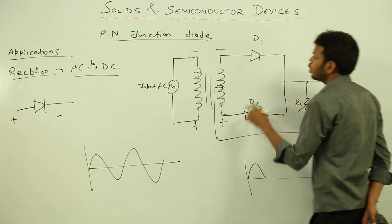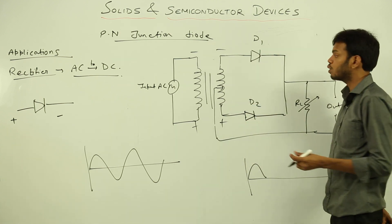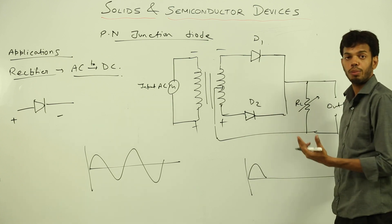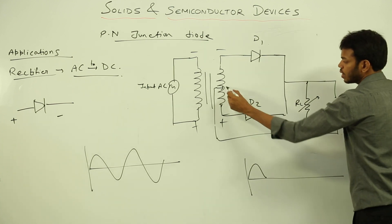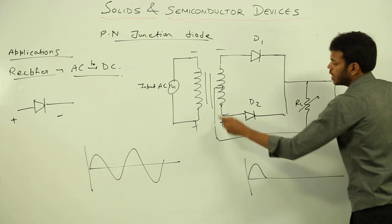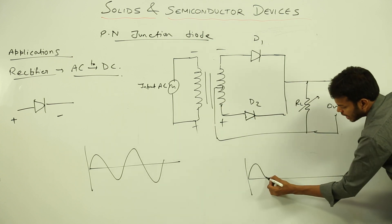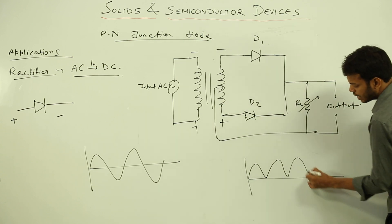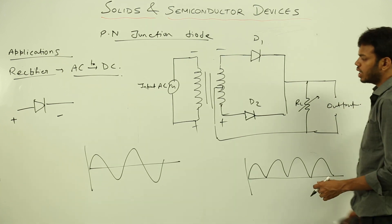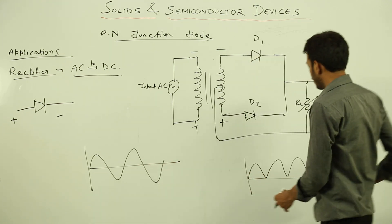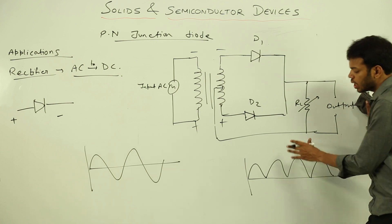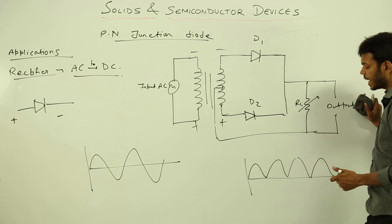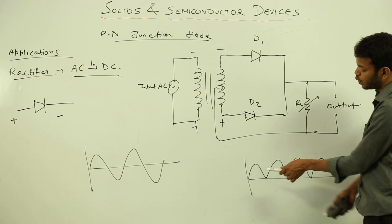During the negative half cycle, the polarity reverses — D1 is now in reverse bias state so it is not going to conduct, but D2 is in forward bias state, so current flows through D2 and you get the output again. During the next half cycle the same process repeats, so all cycles are getting converted into positive cycles.